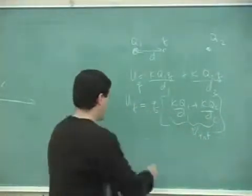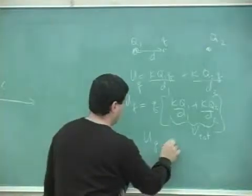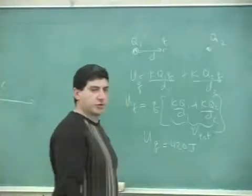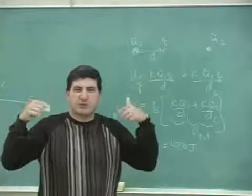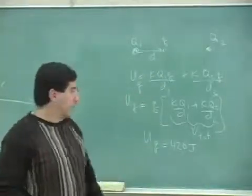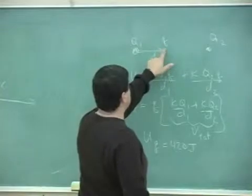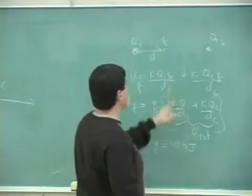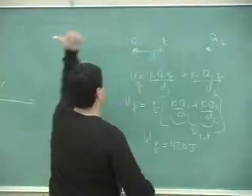So you're gonna get the same answer, 420 joules. It's just a different way of thinking about it. Then you ask yourself, okay, if the potential energy there is 420 joules, what's the potential energy that it has at infinity?